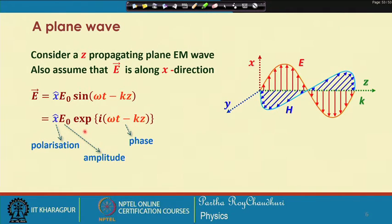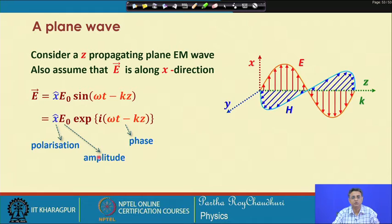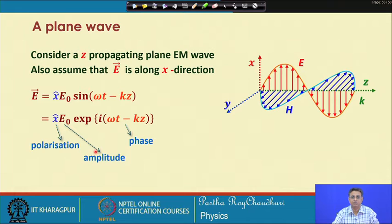These are the three things which can be modulated: polarization, the amplitude, and the phase. Amplitude modulation is relatively simpler to understand; it can happen just by blocking the electromagnetic wave with the characteristic frequency of the modulating wave.